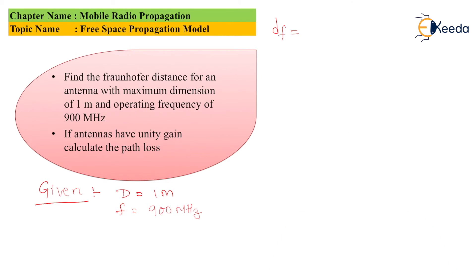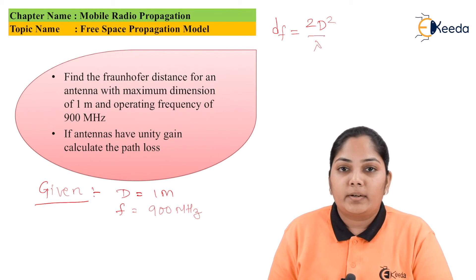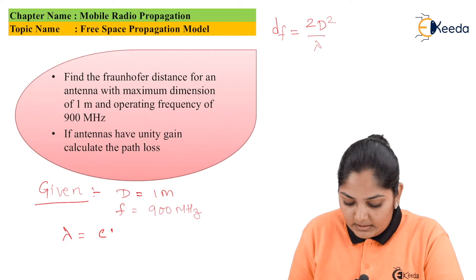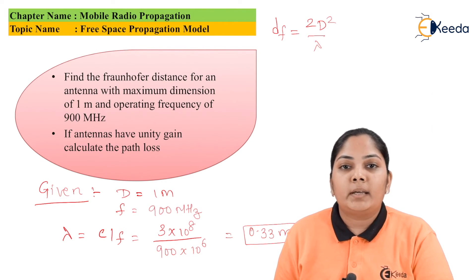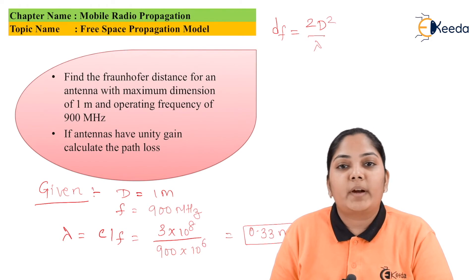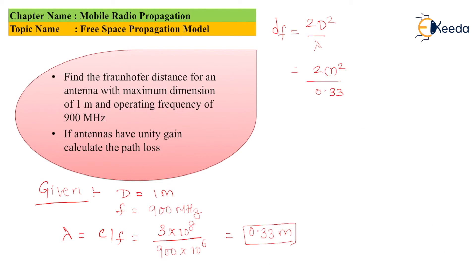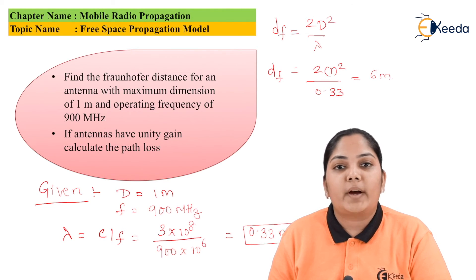We are asked to find the Fraunhofer distance. The formula is df = 2D² / λ. We have the frequency f = 900 MHz, so let us calculate lambda: λ = c / f = 0.33 meters. Using this value of λ and D = 1 meter, the Fraunhofer distance df = 2 × (1)² / 0.33 = 6 meters.